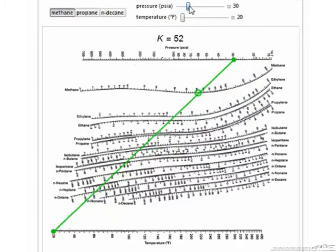First, we will vary the pressure. As we increase the pressure up to 400 psia, the k value drops.